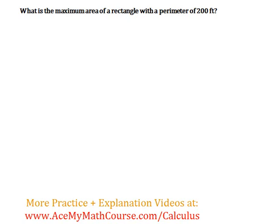Now, what is the maximum area of a rectangle with a perimeter of 200 feet? Okay, so this is an optimization problem.